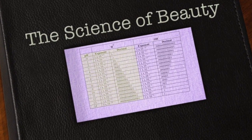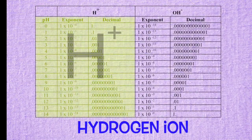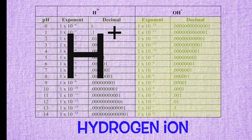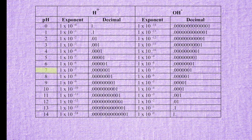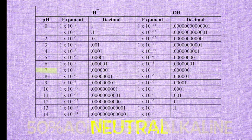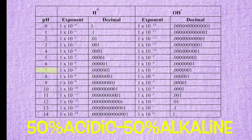pH only measures acidity — the hydrogen ion — while pOH measures alkalinity — the hydroxide ion. pH 7 has 7 zeros, and pOH 7 also has 7 zeros, so pH 7 is neutral because it is 50% acidic and 50% alkaline.